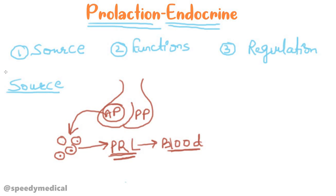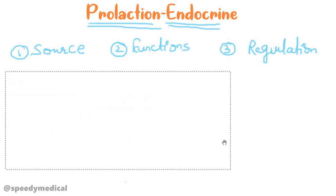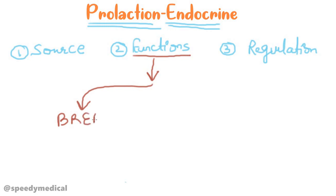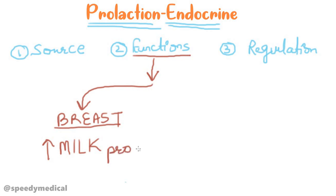Now for the functions of prolactin. When prolactin is released into the blood, its primary target is the breast tissue. In the breast, prolactin stimulates the process of milk production. This is the primary function of prolactin — to increase milk production.